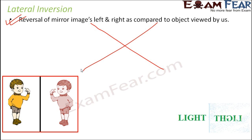Consider this example: if you have a board on which 'LIGHT' is written and you place it in front of a plane mirror, the image formed reads in reverse. This proves the concept of lateral inversion — that a reversal happens with a plane mirror.